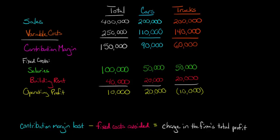You want to look at the contribution margin lost if you were to get rid of the division, which in this case will be $60,000. That's the sales minus the variable cost of the truck division. So that would be $60,000, and we'll put that as a negative number because now it's going to be lost.